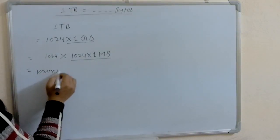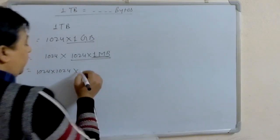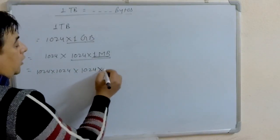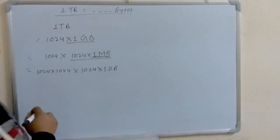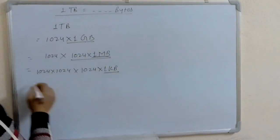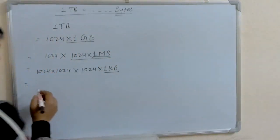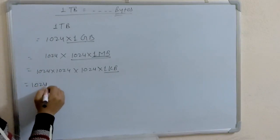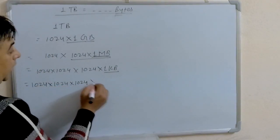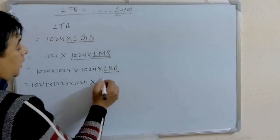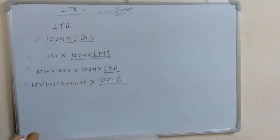1024 into 1024 — leave as it is and break down 1 MB. 1024 KB is equal to 1 MB. So now we have: 1024 into 1024 into 1024 into 1024 bytes is equal to 1 KB.